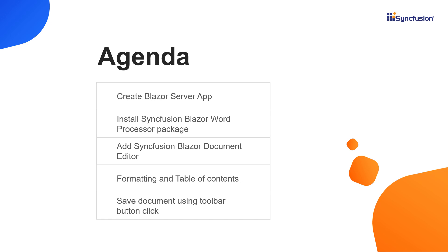After creating the Document Editor, I will show you how to open a document and then work with a few of its prominent features: character formatting, paragraph formatting, adding a table of contents, and finally saving a document along with toolbar customization. To explore the features available in the Syncfusion Document Editor component, you can visit our website link provided in the above YouTube card.